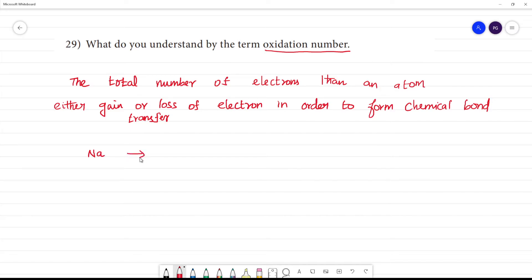Sodium loses 1 electron, becoming Na+. The oxidation number of sodium is +1.